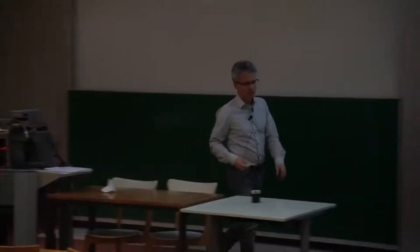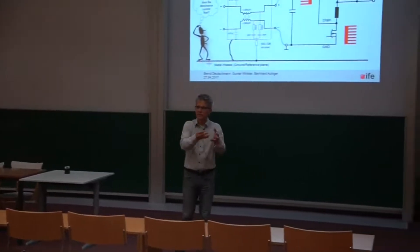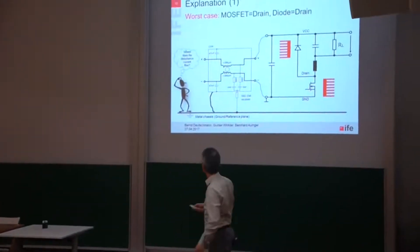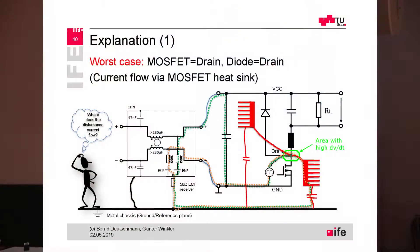In our example, we have measured the conducted electromagnetic emission that is present at the power supply lines using this CDN, a coupling device network connected to an EMI receiver. This is the 50-ohm resistor of the input resistance of the EMI receiver, the measurement device used to measure electromagnetic emission.